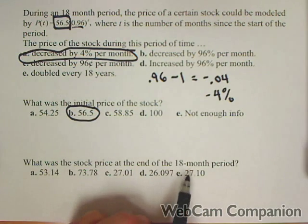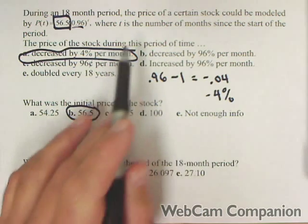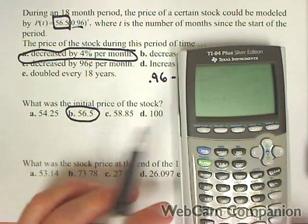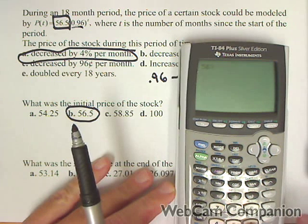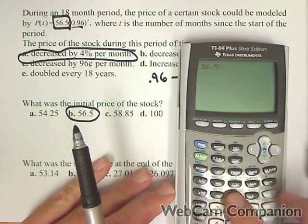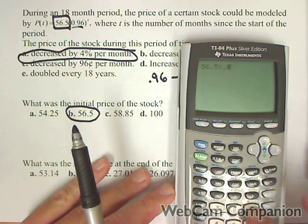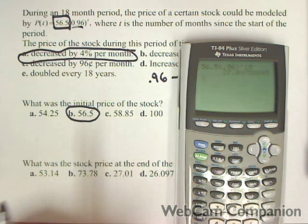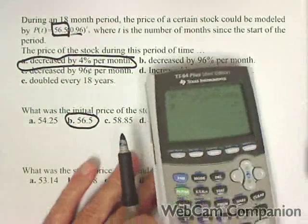What was the stock price at the end of an 18-month period? Because t is in months, we don't have to do any conversions here. We can go straight to our calculator, and we have 56.5 times 0.96 to the 18. We got that it's going to be worth about $27.10.